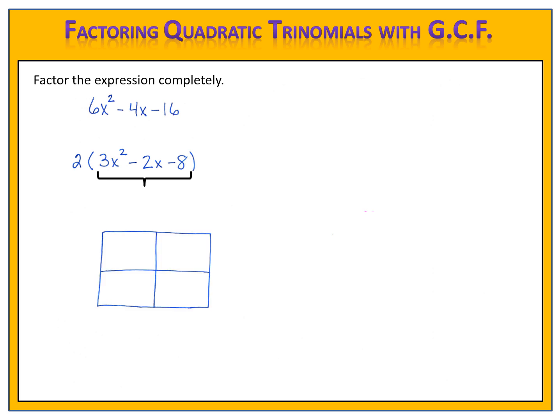What's left in the parentheses is a trinomial that we can factor using the grid. We draw our grid and we're going to look at the numbers inside the parentheses only. That 2 on the outside I'll save until the end. We have 3x squared in the upper left-hand box, minus 8 in the lower right-hand box. Now we look at the 3 and the negative 8 and multiply them together. 3 times negative 8 is negative 24.